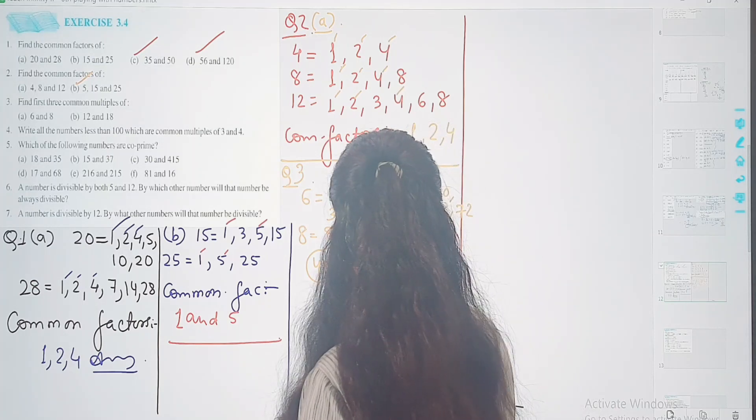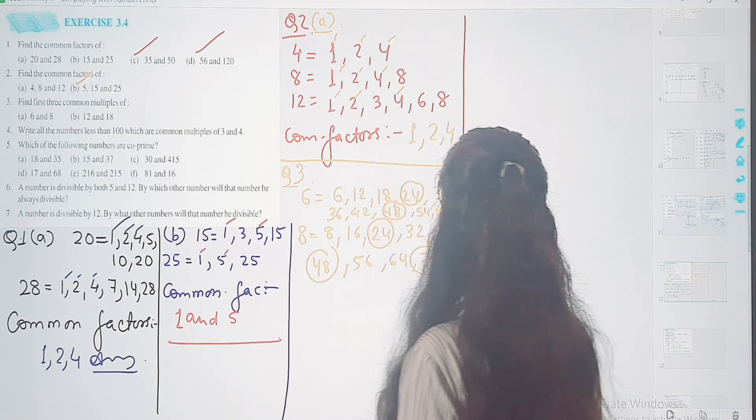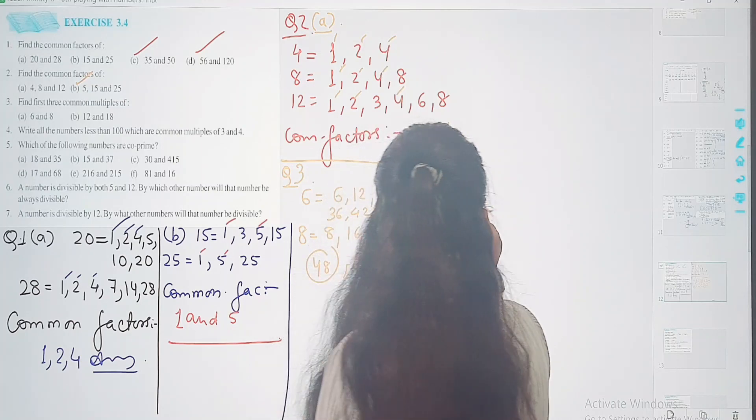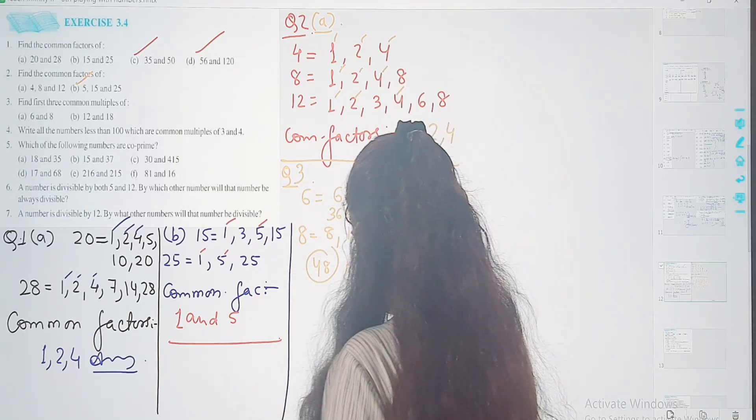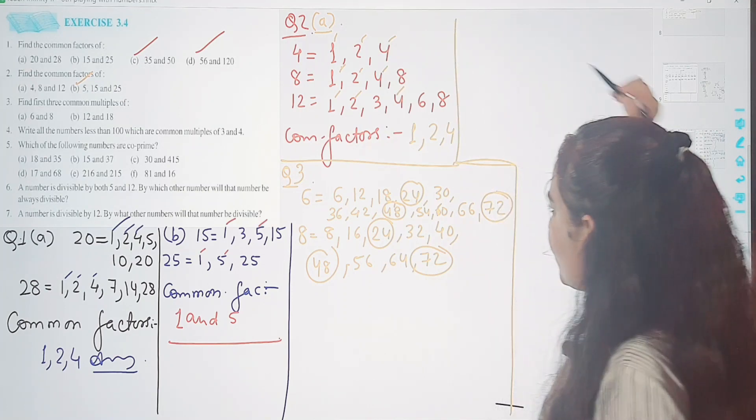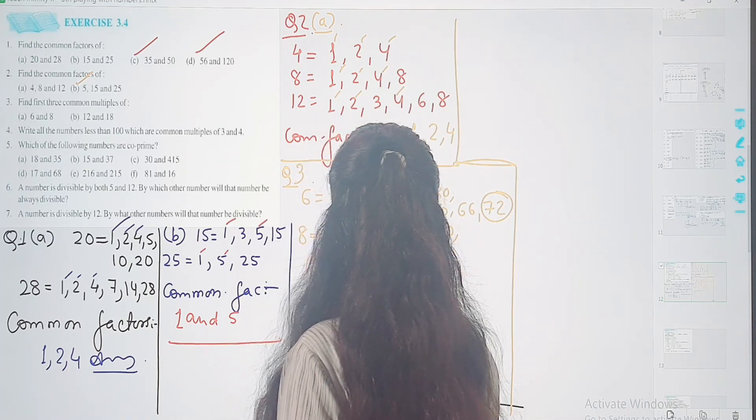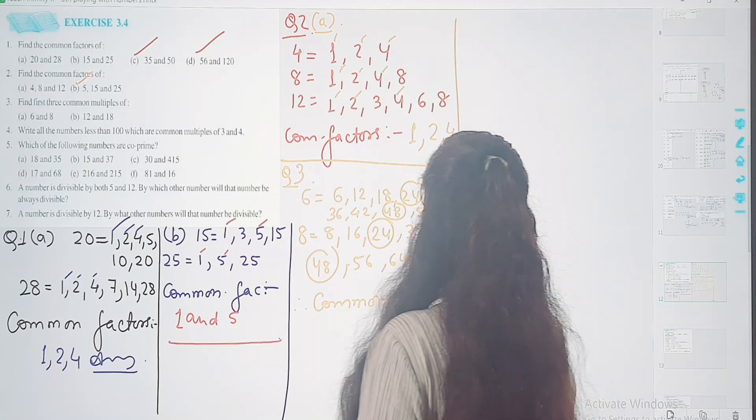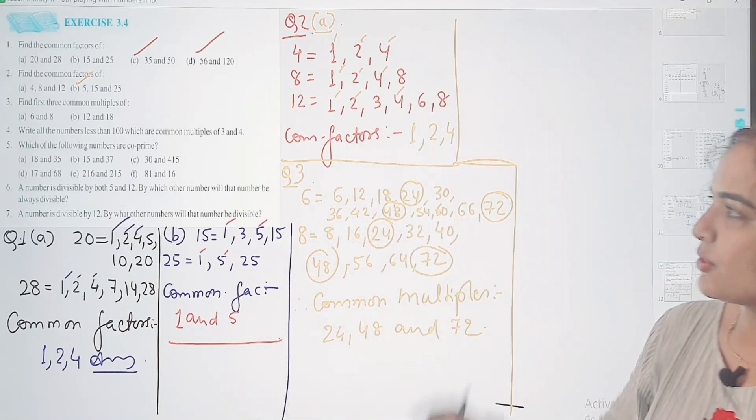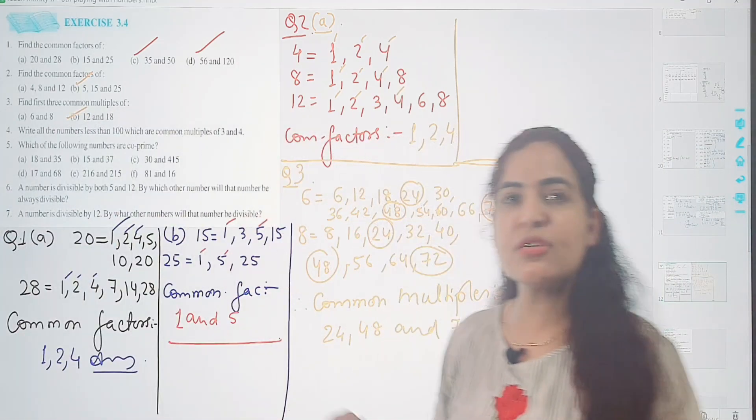Yaha pe bhi aapke paas ane waala hai 48. Deekho, second number bhi mil gaya. Then 6, 9s are 54. 6, 10s are 60. Then 72. Aur yaha pe bhi aapka aajayega. 8, 7s are 56, 8, 8s are 64, 8, 9s are 72. Aagaya na aapke paas? Toh common multiples are 24, 48, and 72. Very simple question. Of course, 12 or 18 ka aap khud nikal lehenge. I believe you people can do this question on your own.